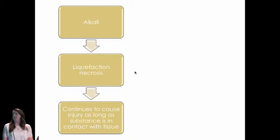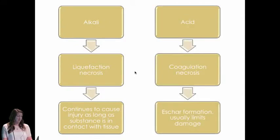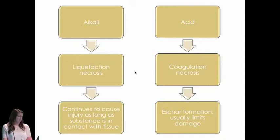An alkali forms liquefactive necrosis, which is actually worse because it stays in contact with the tissue and doesn't just slough off — so it continues to cause injury as long as it's present, which is why it's so dangerous. Acidic agents cause coagulation necrosis, almost forming a plaque or eschar, which limits the damage.